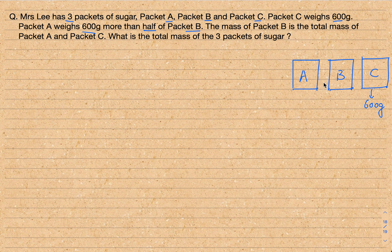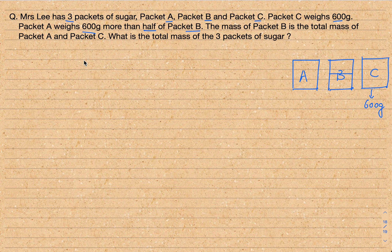That means whatever is the content in packet B, if we divide it into two parts, then packet A is 600 more than half of it. So let's draw it in the form of a model so that you understand it better. The one which is very straightforward is packet C, which we just need to show as 600 grams.